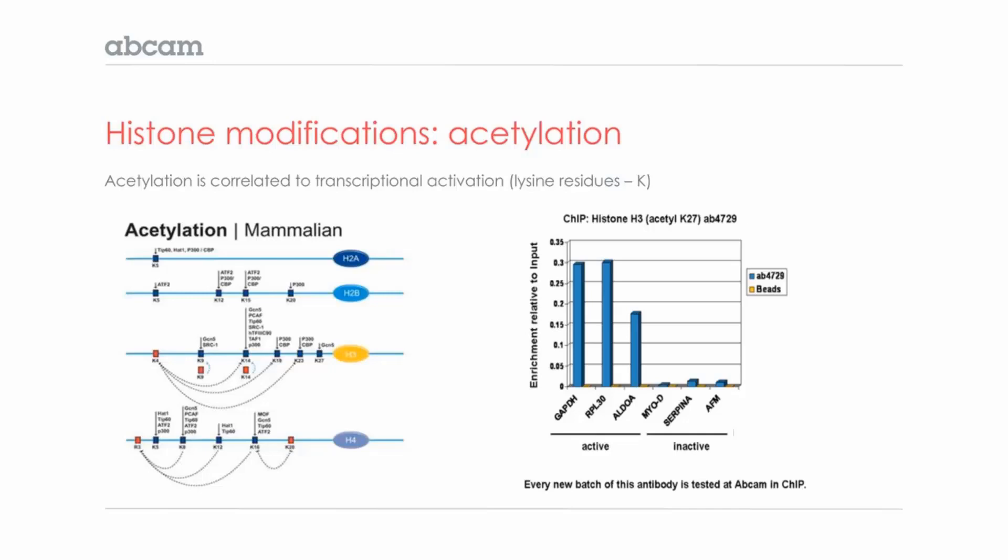Here, we pull down DNA that was bound to this histone modification and performed qPCR using primers for several different loci to determine where the modification is located. You can see that this modification is located at promoters of genes that are constitutively active, such as GAPDH, RPL30, and ALDOA, which we expect since acetylation is associated with gene activation. We can also see that this modification is not present at inactive genes, which we also expect.